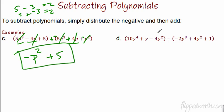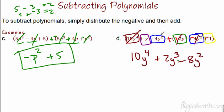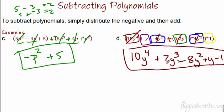Why don't you pause the video and try d by yourself? I wrote the first term, 10y to the fourth. I changed the minus to a plus and changed all the second signs. I then identified by colors which terms are like terms. So going down: 10y to the fourth, then to the third power we have a positive 2y so we write plus 2y to the third. Then to the second power: negative 4y squared and another negative 4y squared — that's negative 8y squared. Then we have plus y and then minus 1. So that's our answer for d. We're just combining like terms; you can only add them if their exponents on the variable are the same.